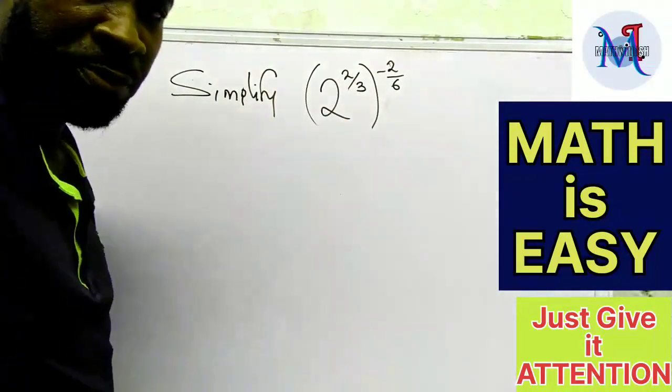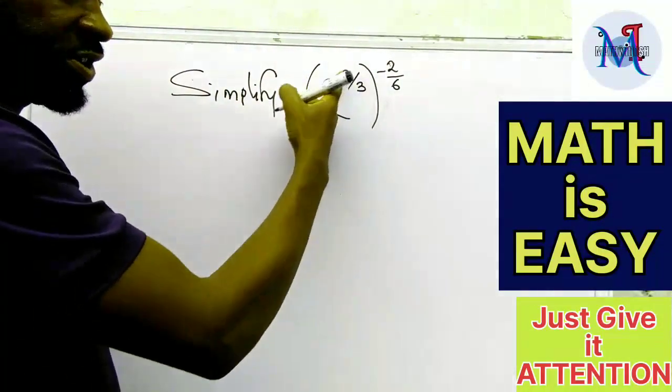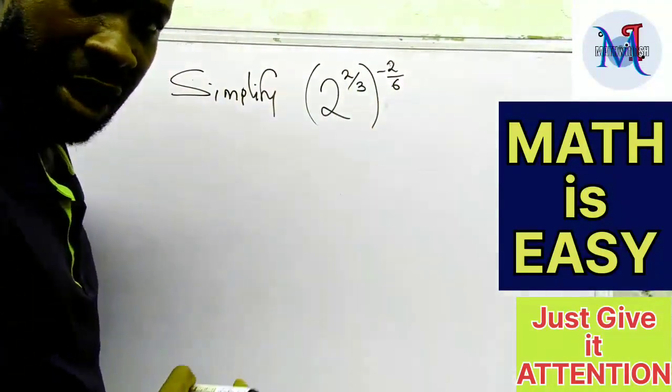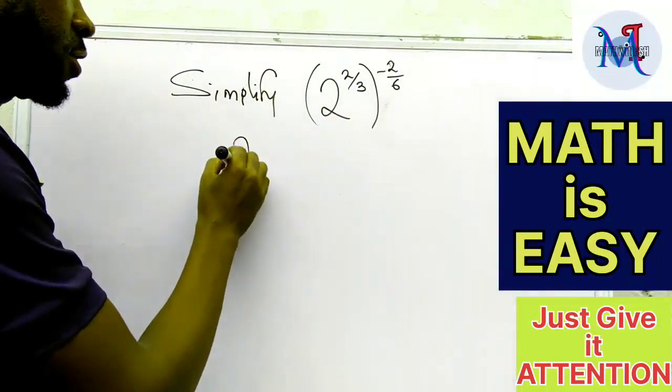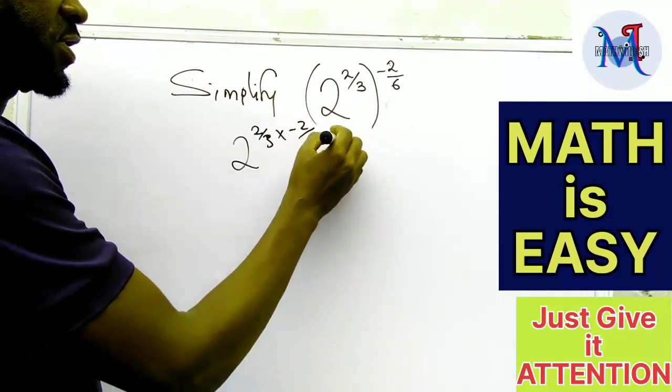So all we have to do at this point is to apply the power law. Okay, this power inside the bracket multiplies this one outside. So I'm going to have 2 is about 2 over 3 times, minus 2 over 6.